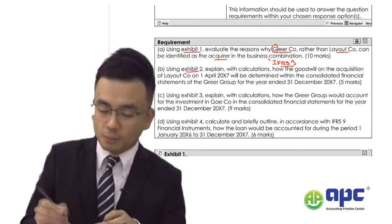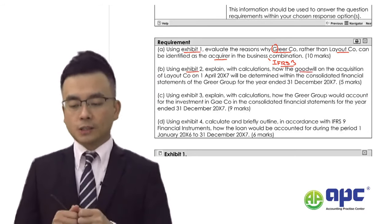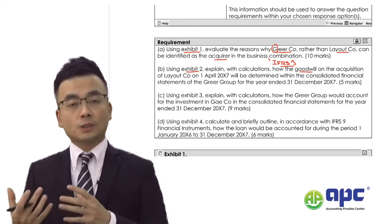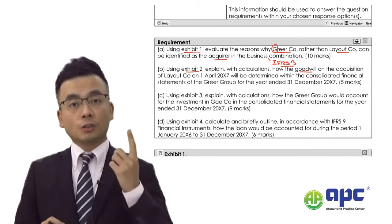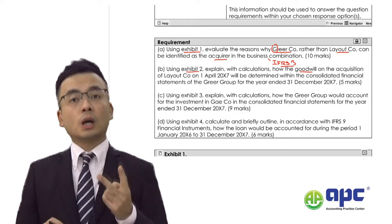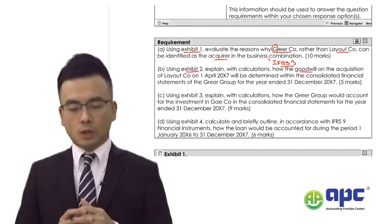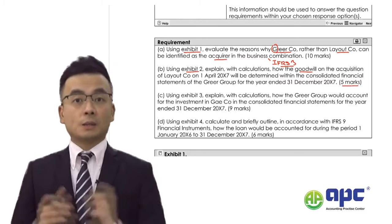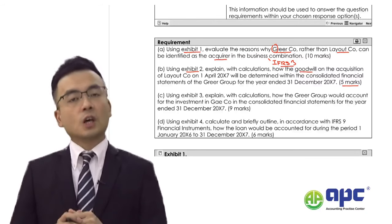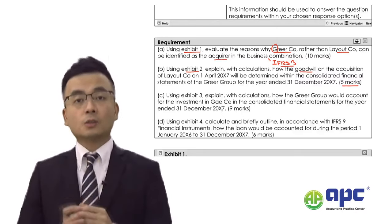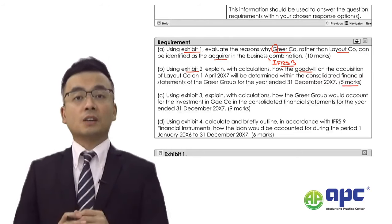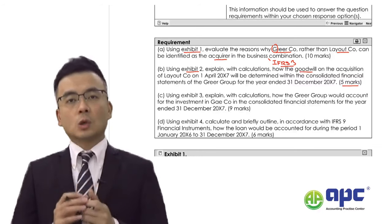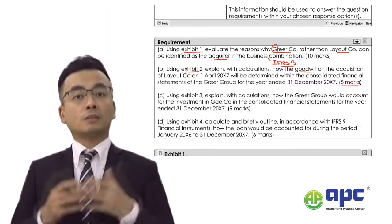Moving on to Part B, using Exhibit 2 information, we are required to explain with calculations how the goodwill arises on the acquisition date. This means subsequent measurements, including impairment of goodwill and foreign exchange differences, are not required in this part. We are given five marks, so I would allocate the majority — around four marks — to calculations. In this paper, nine out of ten times there will be a step acquisition, so the treatment of the first consideration's gains and losses goes into the P&L.